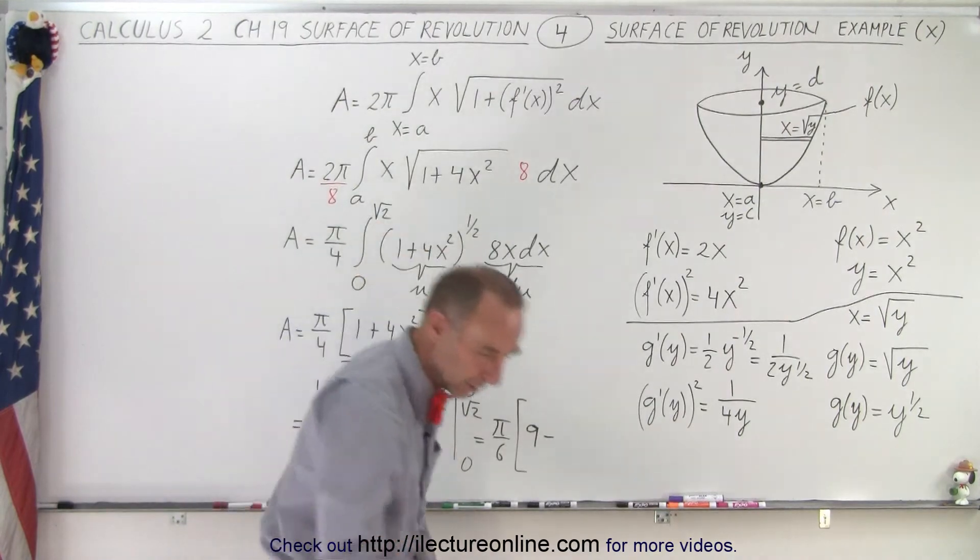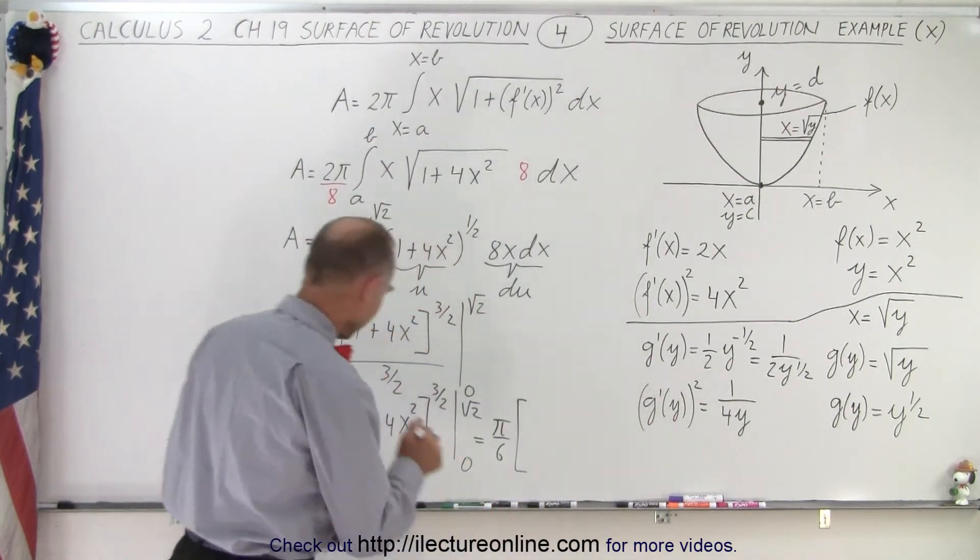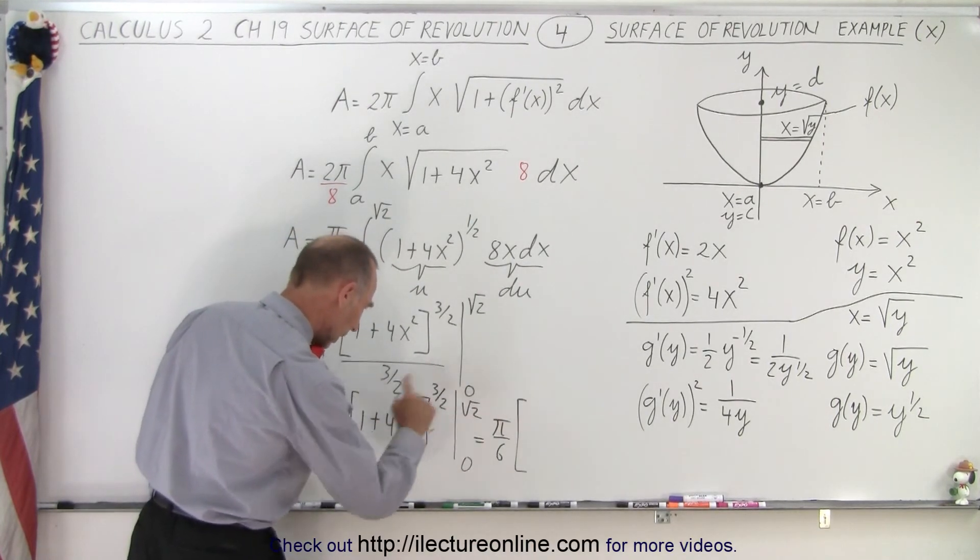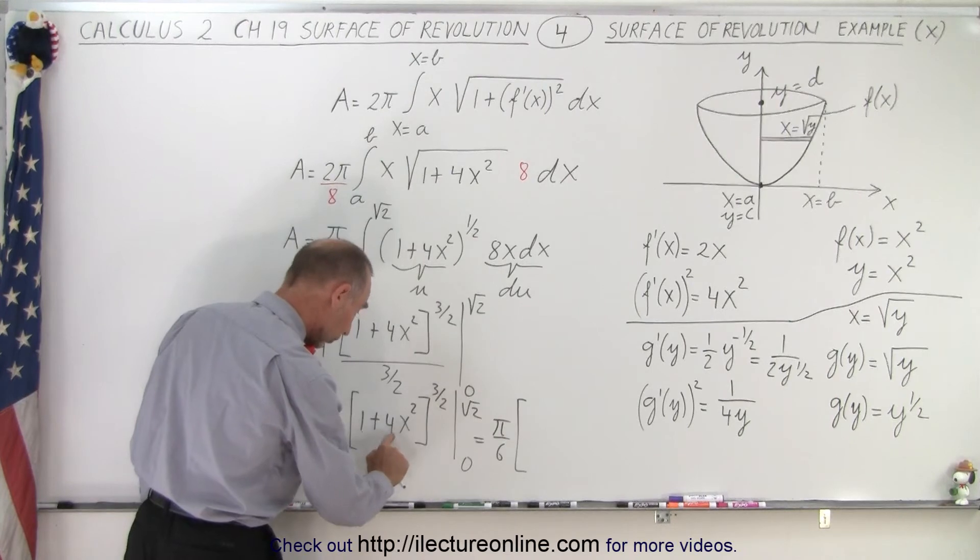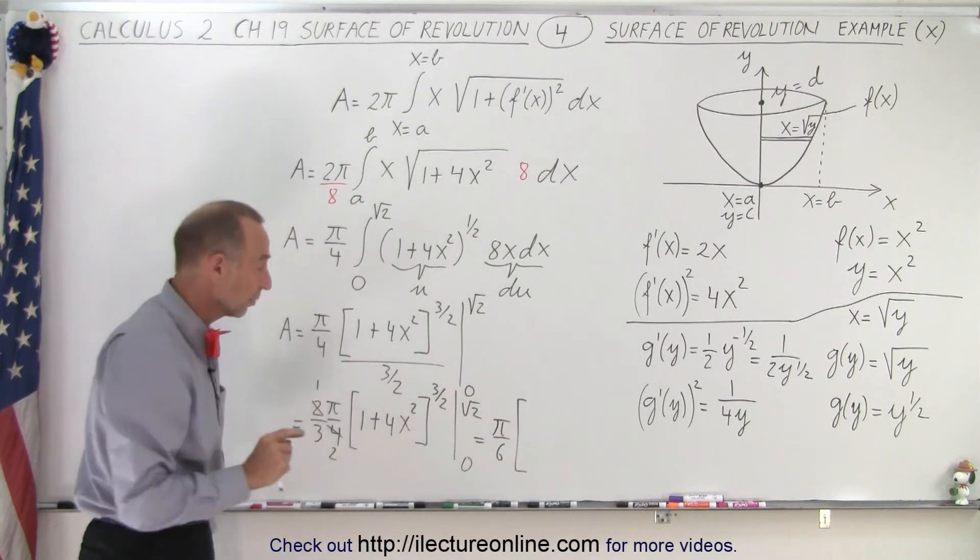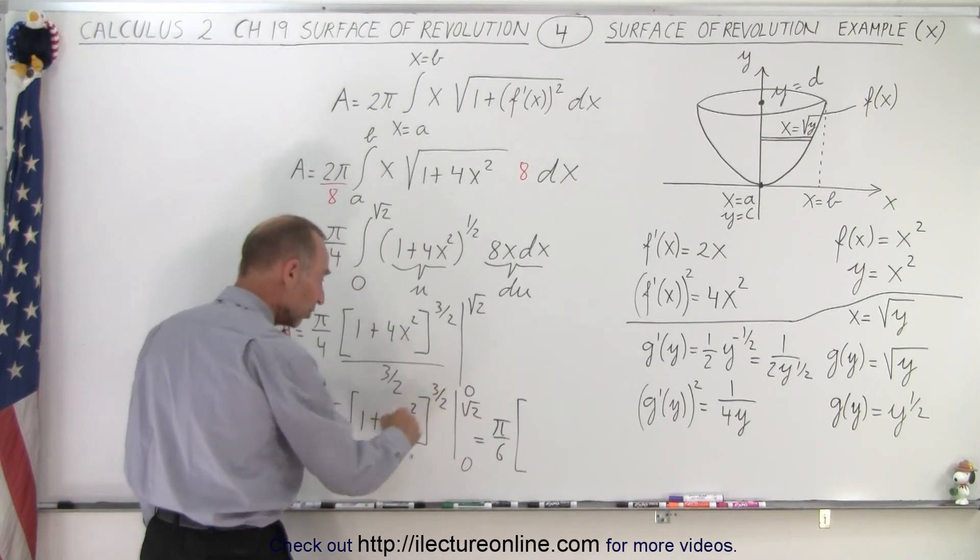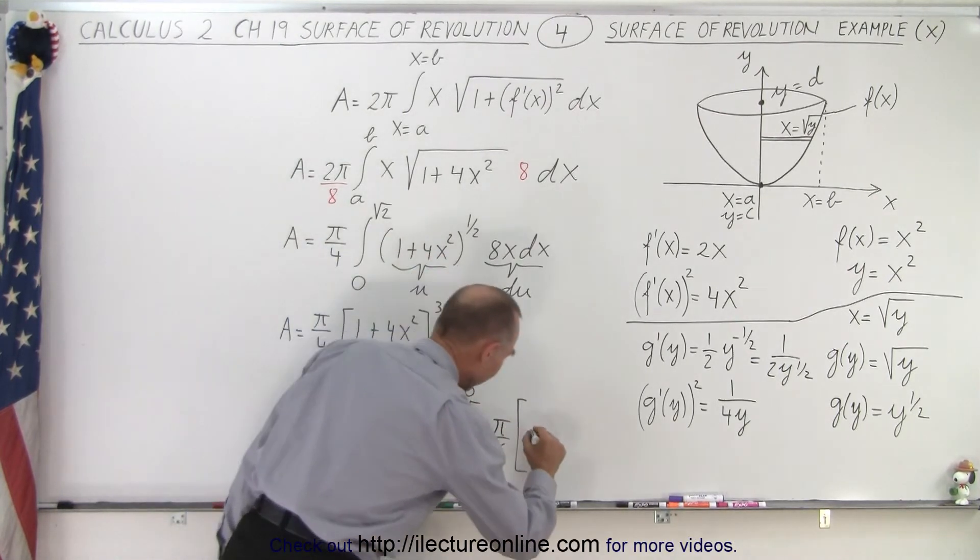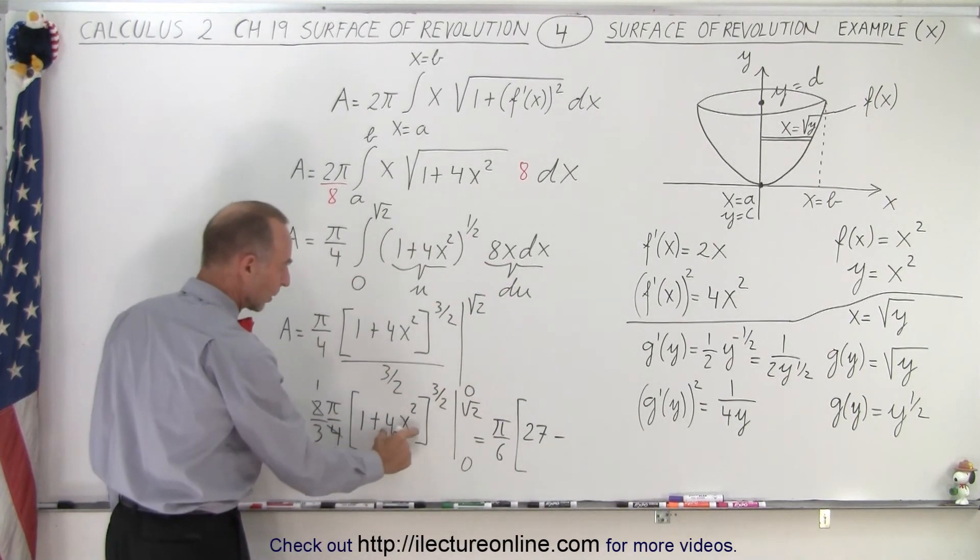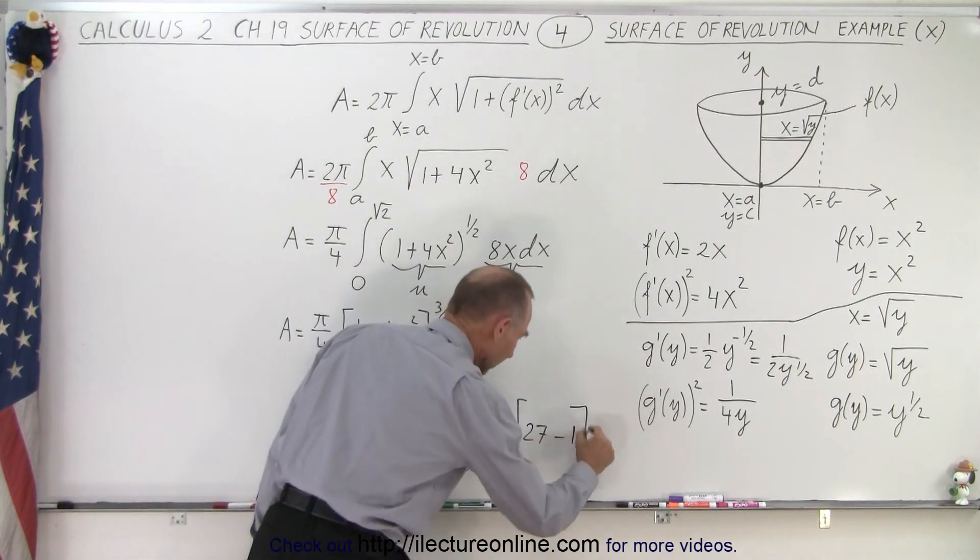Oh wait a minute. Wait a minute. I made a mistake. Let's do this again. When I plug in the upper limit square root of 2, I end up with 2 times 4 is 8 plus 1 is 9, but it's to the 3/2 power. So that means we take the square root of 9, which gives us 3, and then we cube it, which gives us 27. That's the number we need up here. Minus. Now we plug in the lower limit, this becomes 0. 1 to the 3/2 power is still 1.